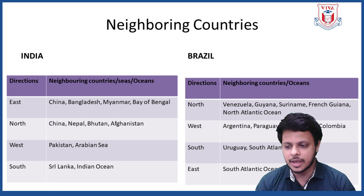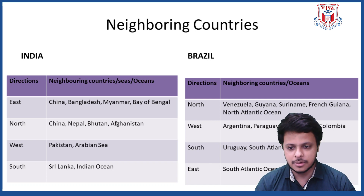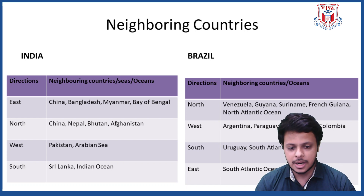Towards the southern side of India we have Sri Lanka and the Indian Ocean. If we talk about Brazil, the neighboring countries towards the north side are Venezuela, Guyana, Suriname, French Guiana, and the North Atlantic Ocean. Towards the western side we have Argentina, Paraguay, Bolivia, Peru, and Colombia. Towards the south side we have Uruguay and the South Atlantic Ocean, and towards the east side we also have the South Atlantic Ocean.